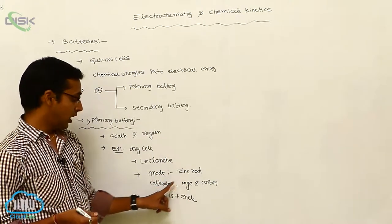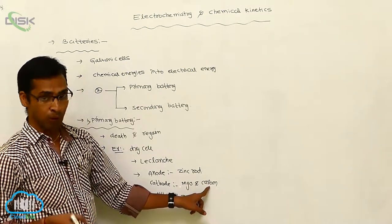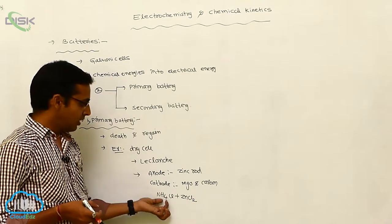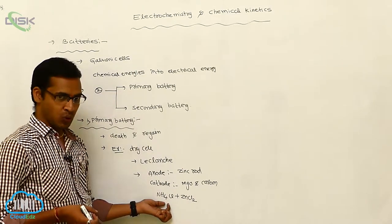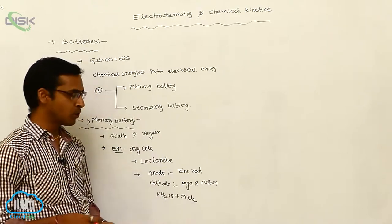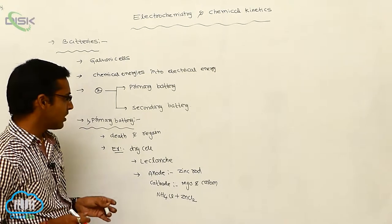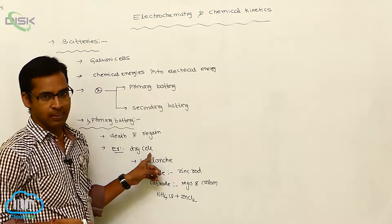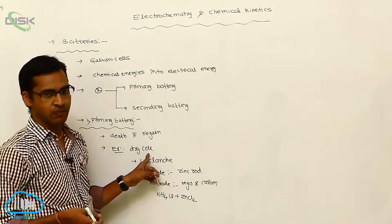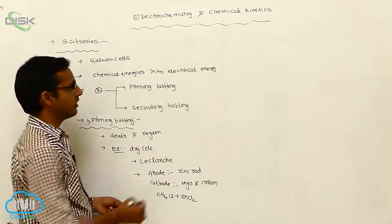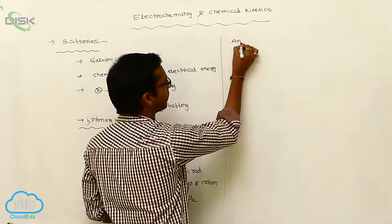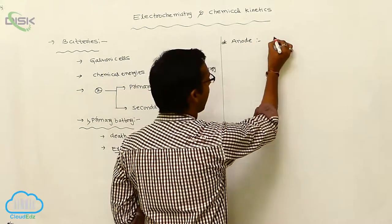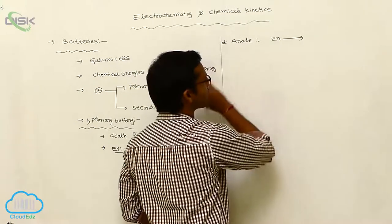To summarize the dry cell: the anode is a zinc rod, the cathode is manganese oxide and carbon powder, and the electrolytic solution between the anode and cathode is ammonium chloride and zinc chloride. The chemical reaction in a dry cell is complex, but in simple representation, at the anode, oxidation takes place.